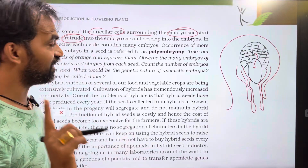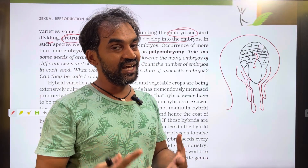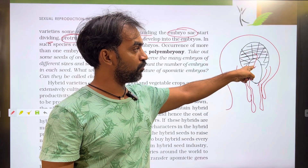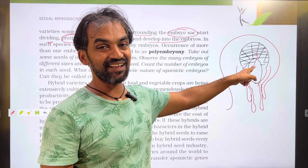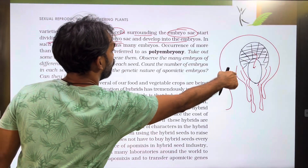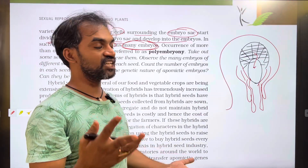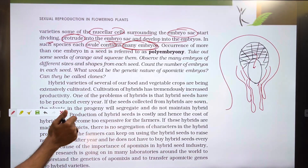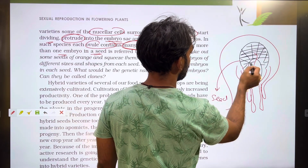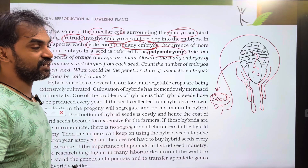These new nucellar cells, which are diploid, divide and develop into embryos alongside the embryo sac zygote embryo. In such species, each ovule can produce many embryos. More than one embryo in a seed is referred to as polyembryony.